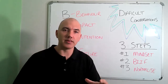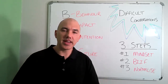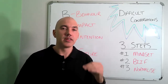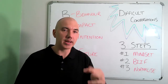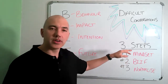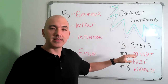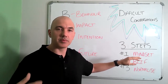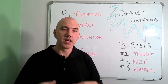I'm going to show you today a three-step process we can use to get the best possible outcome. Three elements: one is mindset, the second one is BIF — using a process, a script, a template — and then the third one is to normalize it.